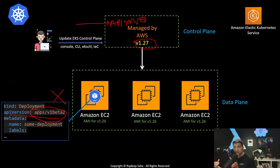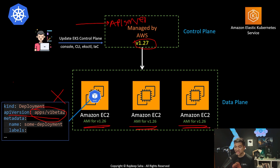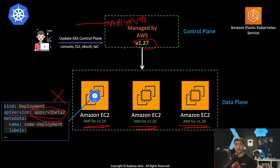Your running workloads will start failing as soon as something scales down and needs to scale up, or you try to deploy something — they will all start to fail. Even if the worker nodes are still on the previous version AMI, it does not matter. As soon as you update the control plane to the newer version, all APIs must conform to that newer version.